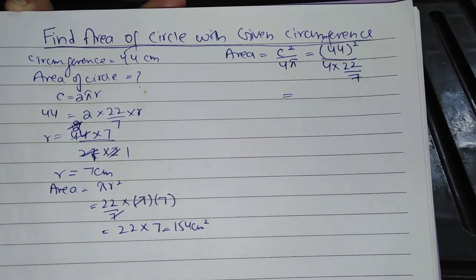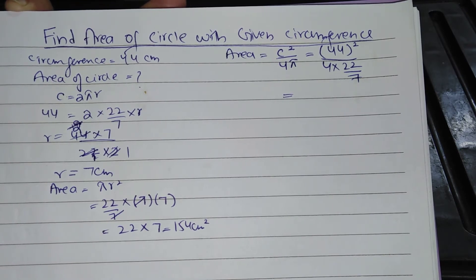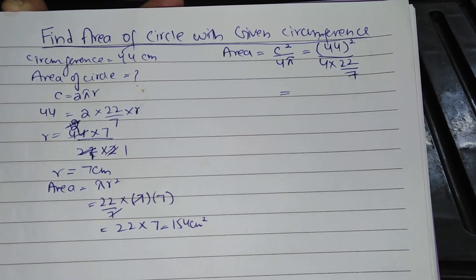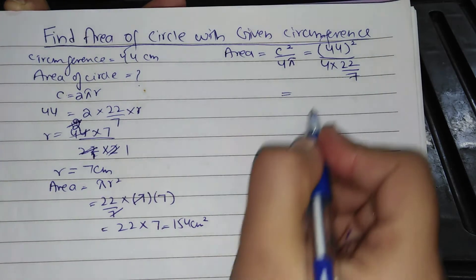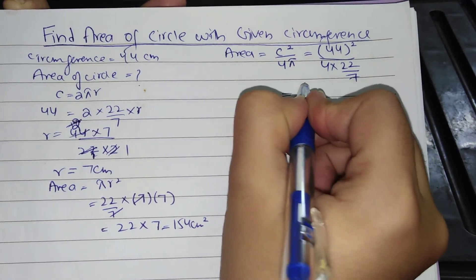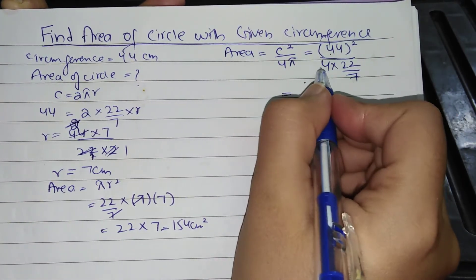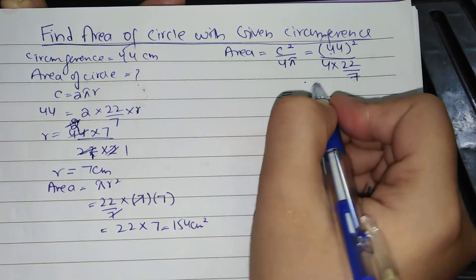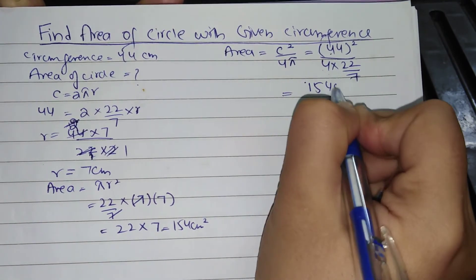So the answer will be, by squaring 44 and dividing by 4 into 22 by 7, answer will be 154 centimeter square. So this is the short trick of finding area of circle if circumference is given.